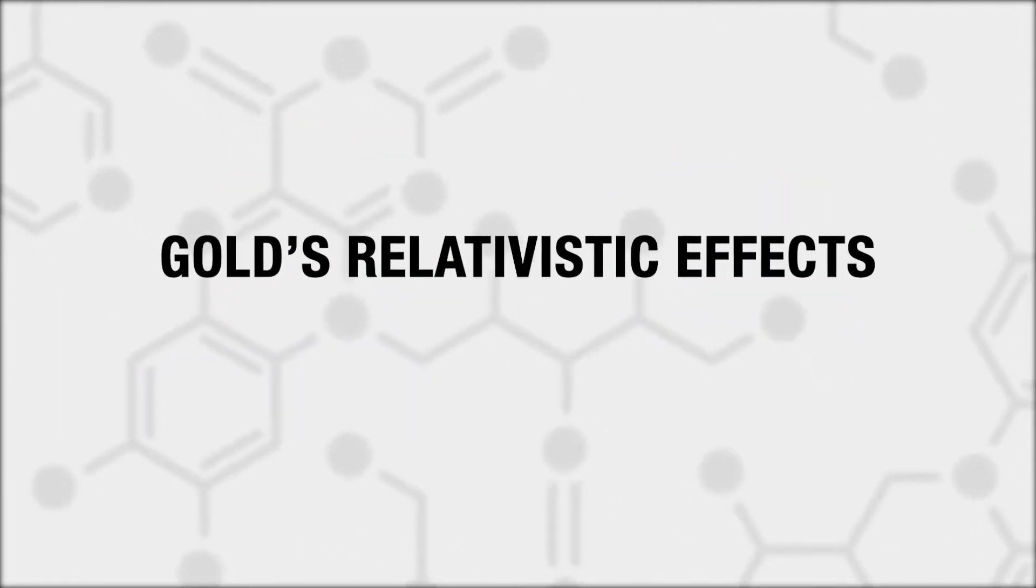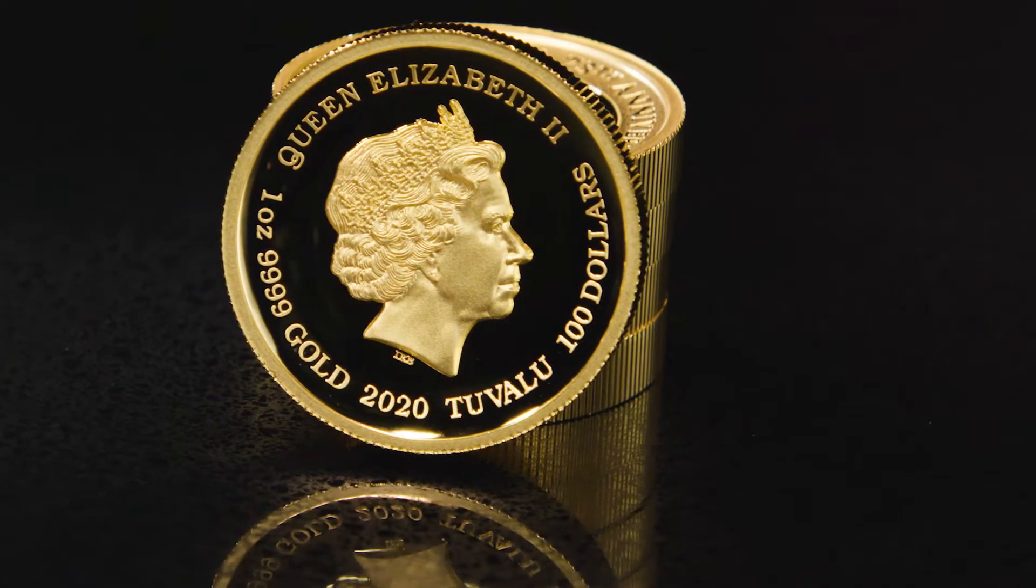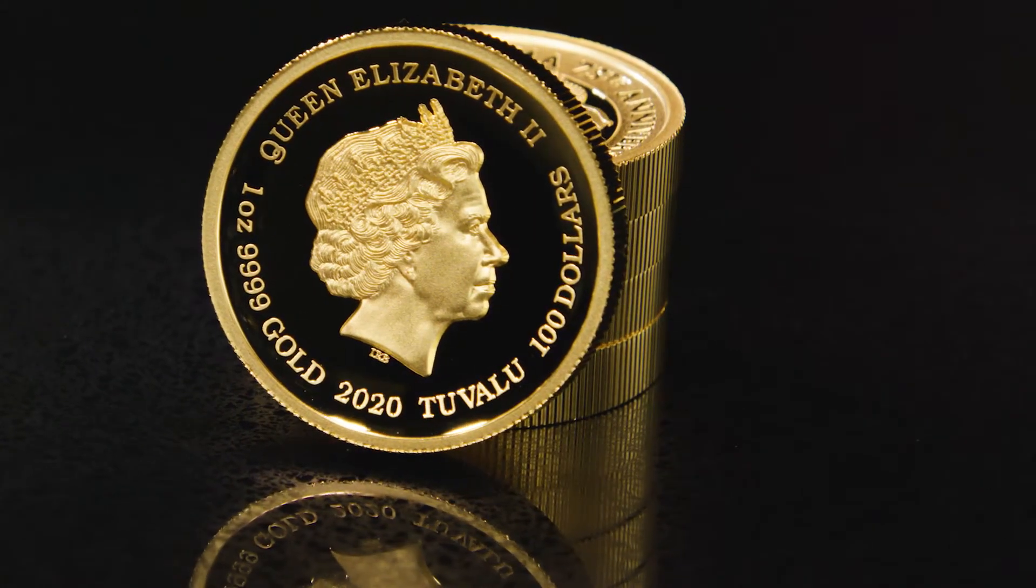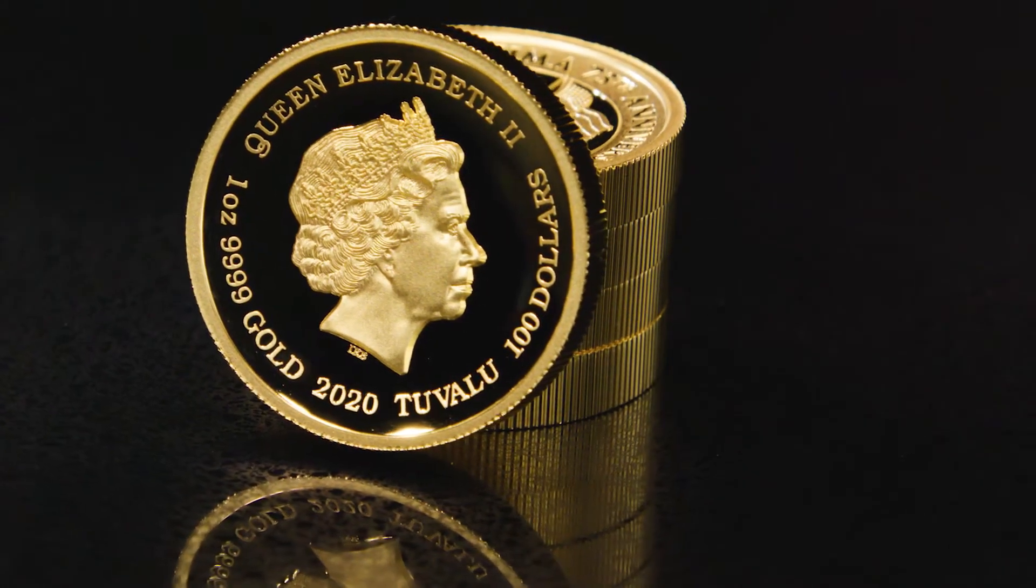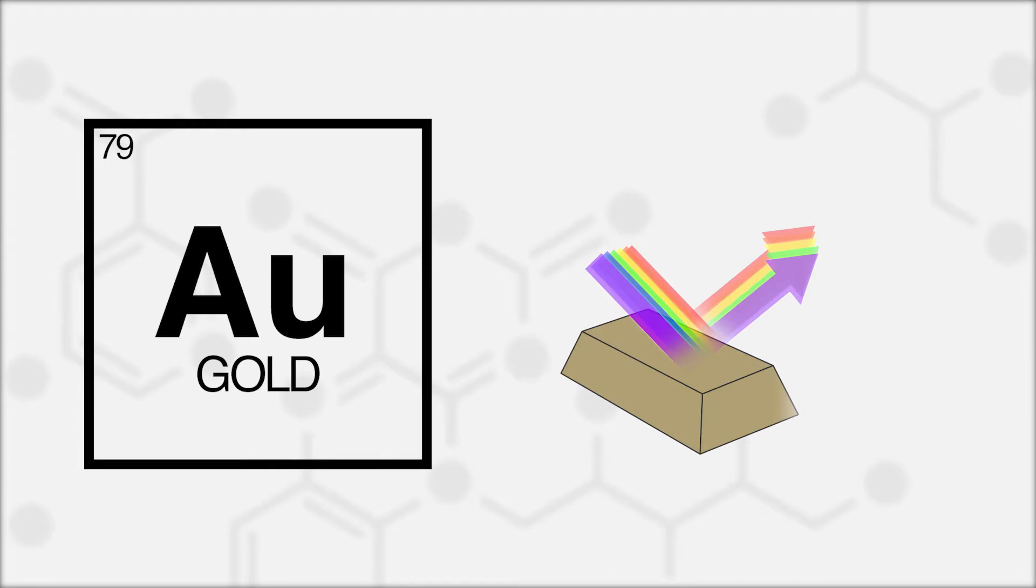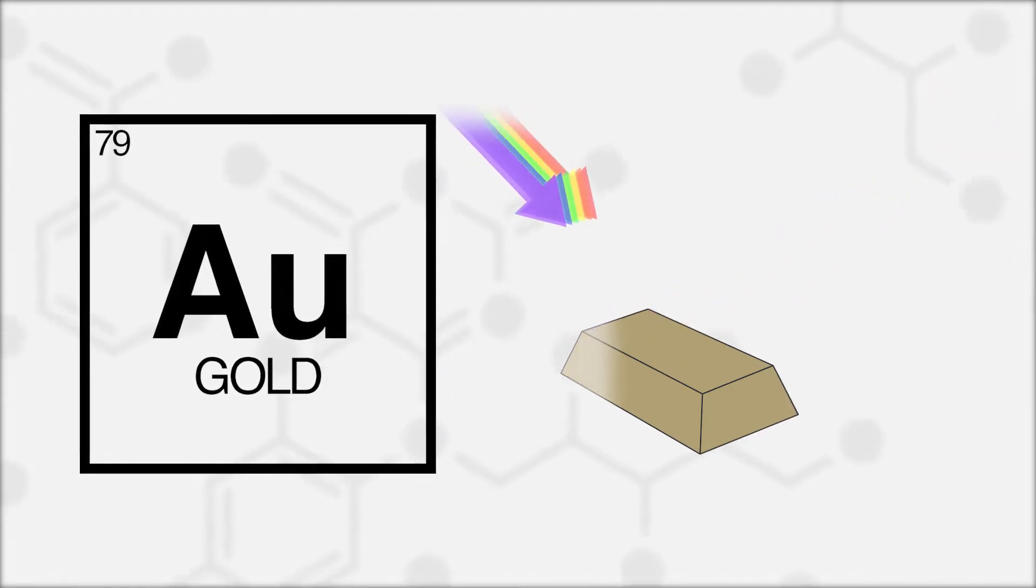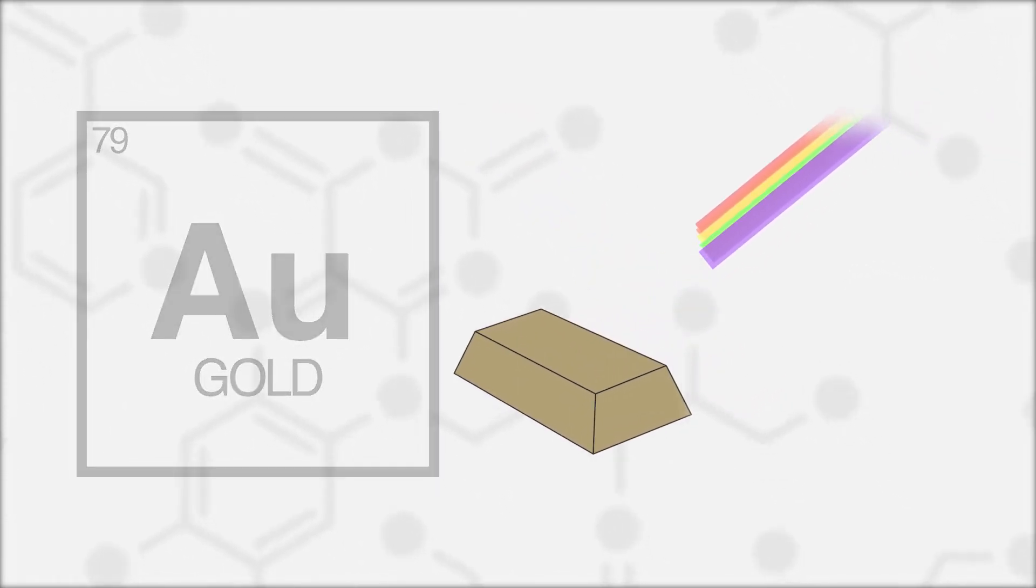Gold's relativistic effects. Gold is used as an example because it's not silvery like most other metals due to relativistic effects. Unlike other metals, gold absorbs blue light more than it does other wavelengths of light.